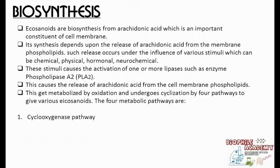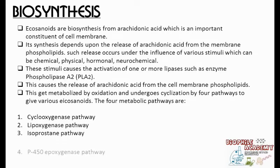Basically there are four pathways for the synthesis of eicosanoids: 1. Cyclooxygenase pathway, 2. Lipoxygenase pathway, 3. Isoprostane pathway, 4. P450-epoxygenase pathway. The cyclooxygenase pathway helps in the biosynthesis of prostaglandins, whereas the lipoxygenase pathway helps in the biosynthesis of leukotrienes. The other two pathways are helpful in the synthesis of various other members of eicosanoids.